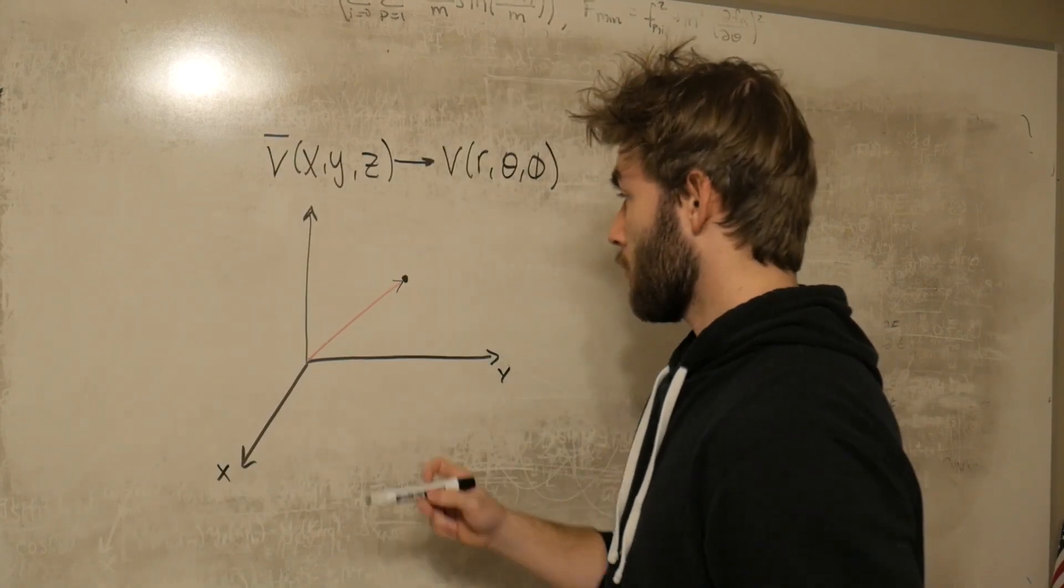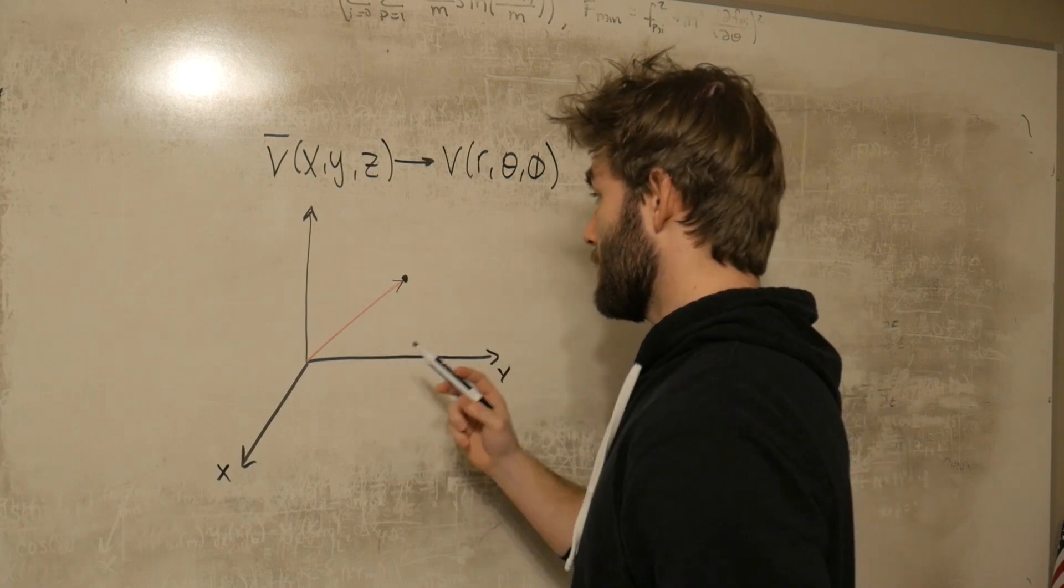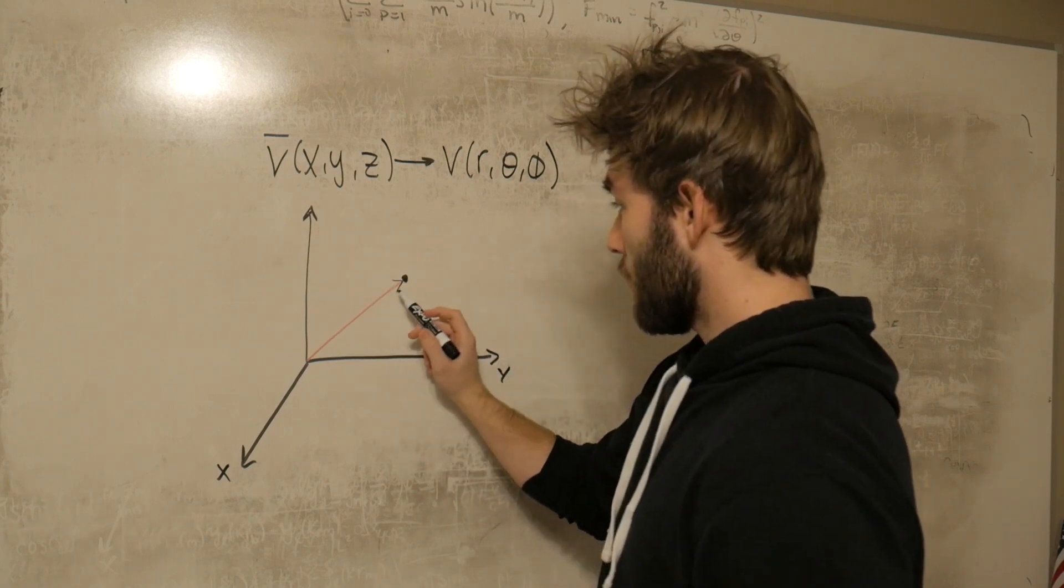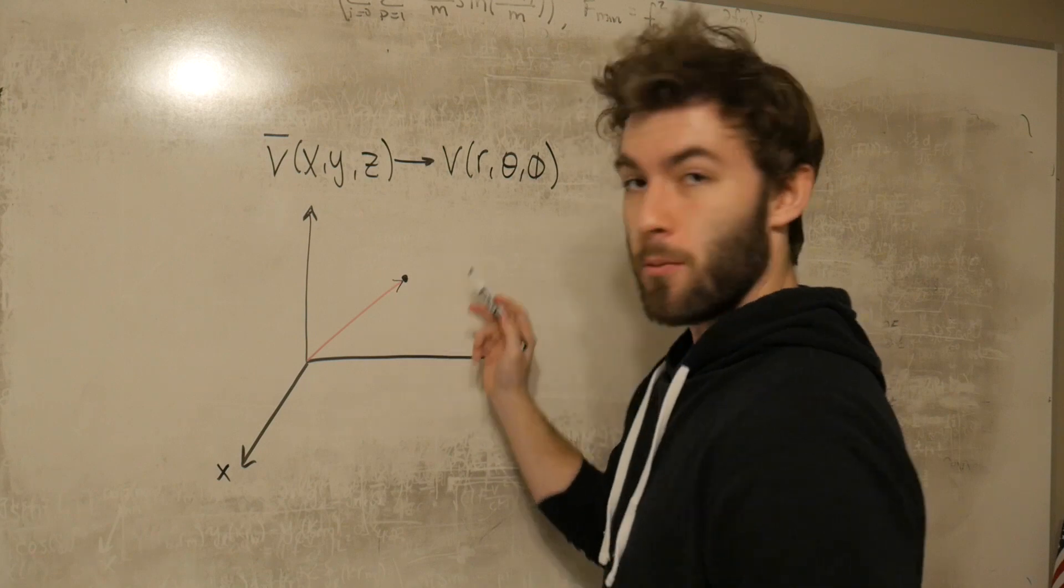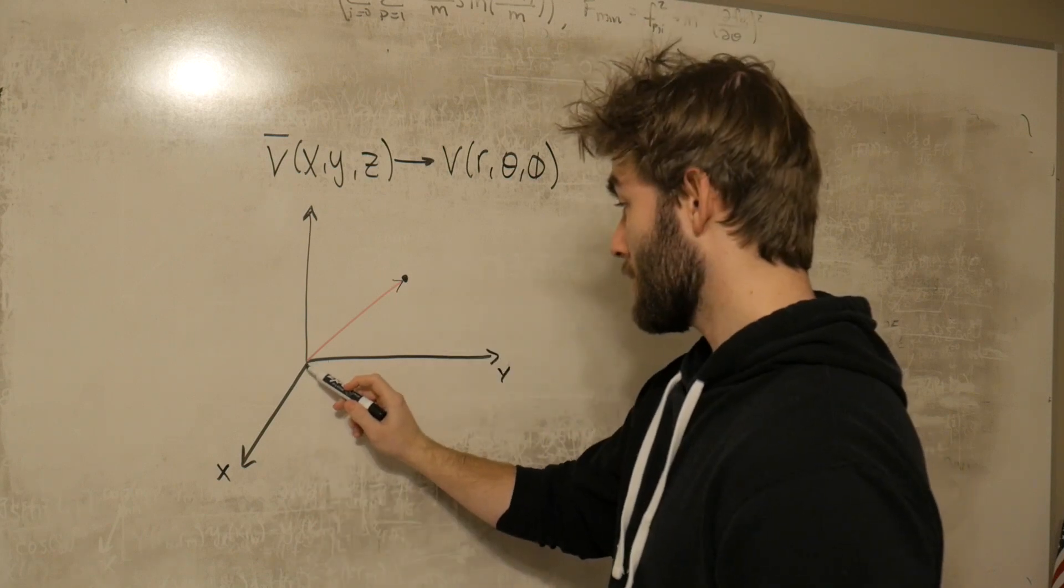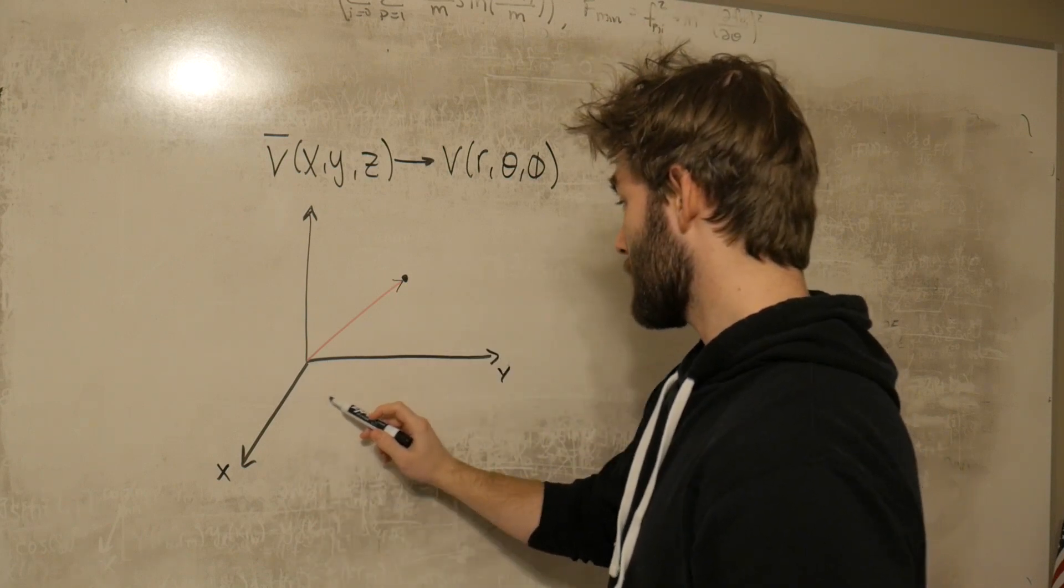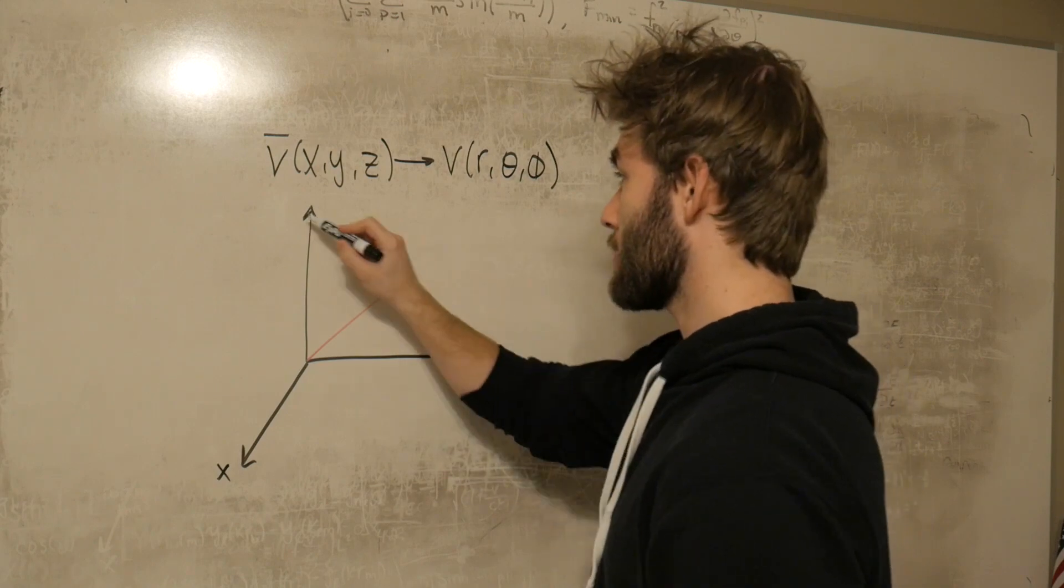So let's say that we have some vector v that we're expressing in terms of x, y, and z. Now this corresponds to being able to specify where a point in space is by going some distance in the x direction, some distance in the y direction, and then some distance in the z direction.